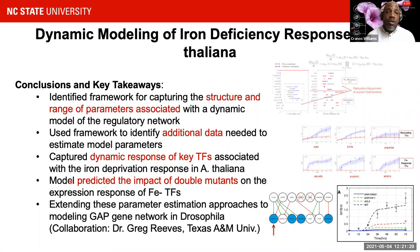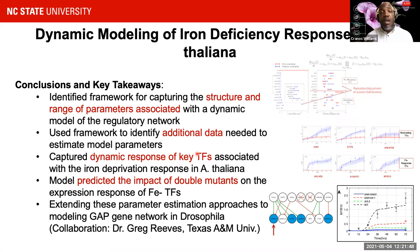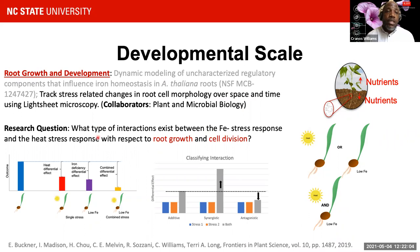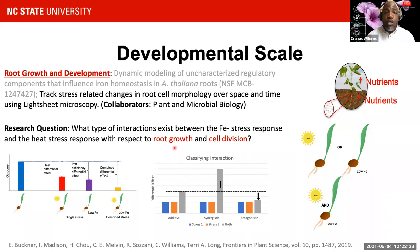In conclusion for this analysis, we identified a framework for capturing the structure and range of parameters associated with this regulatory network. The framework helped identify additional data needed and used those data to estimate parameter ranges using MCMC, then characterize the overall dynamic response of the system. We validated aspects by predicting the impact of double mutants on specific iron response genes. A second study asked: can we assess or quantify the types of interactions that exist between different stresses imposed on Arabidopsis, specifically as they relate to root growth and cell division?